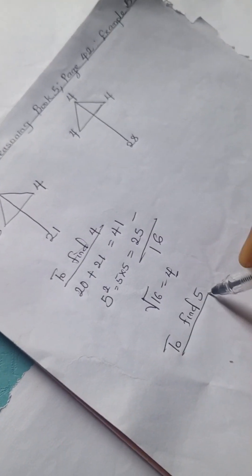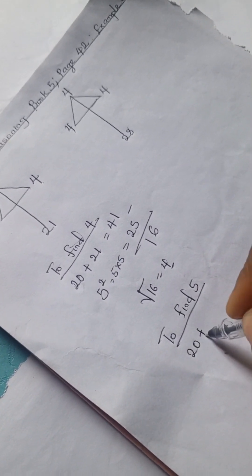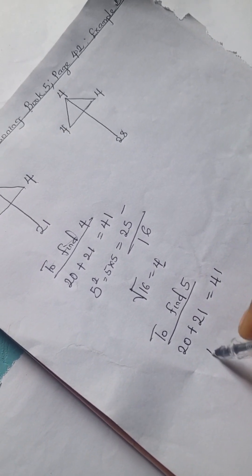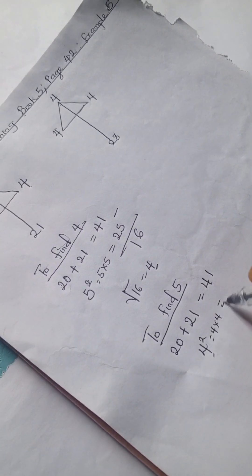Let's find 5. We're going to follow the same route. To get 5, we have 20 plus 21 equals 41. 4 squared, which is 4 times 4, is 16. You subtract and you have 25. Square root of 25 is 5.